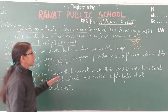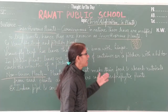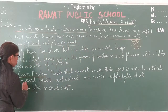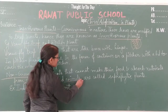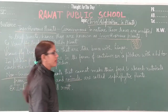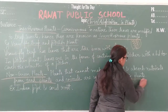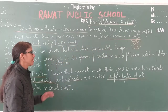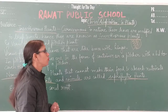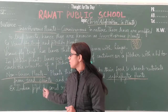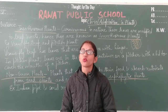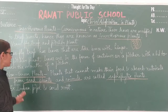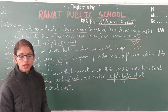Plants that cannot make their own food absorb nutrients from other plants and animals. These are called saprophytic plants. They obtain their nutrition from other plants and animals, which is why they are non-green — they lack the chlorophyll needed to prepare food. Examples of these plants are the Indian pipe and the coral root.